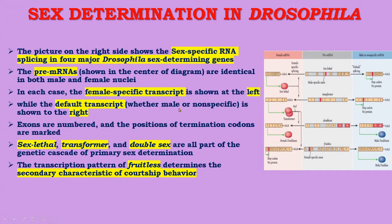The diagram shows sex-specific RNA splicing in the four major Drosophila sex-determining genes. The pre-mRNAs shown in the center are identical in both male and female nuclei. The female-specific transcript is shown on the left, while the default transcript — male or non-specific — is shown on the right. Exons are numbered and positions of termination codons are marked. Sex lethal, transformer, and doublesex are all part of the genetic cascade of primary sex determination, while the transcription pattern of fruitless determines the secondary characteristic of courtship behavior.